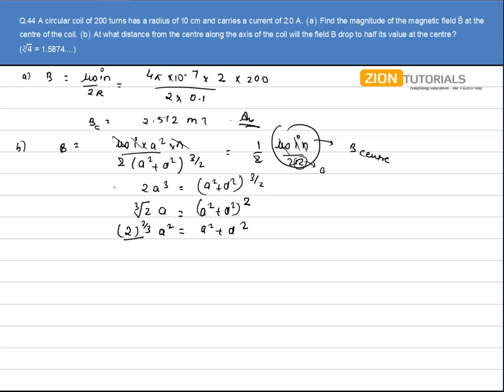Now, this 2 to the power 2 by 3 value is given to me as 1.5874. A square is equal to A square plus D square.